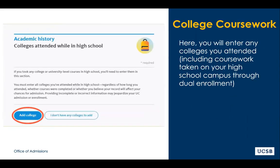If you took any college courses and generated a transcript prior to graduating high school, you must also report them in the academic history section titled Colleges Attended in High School. This includes any college coursework, even college courses that were taken on your high school campus.